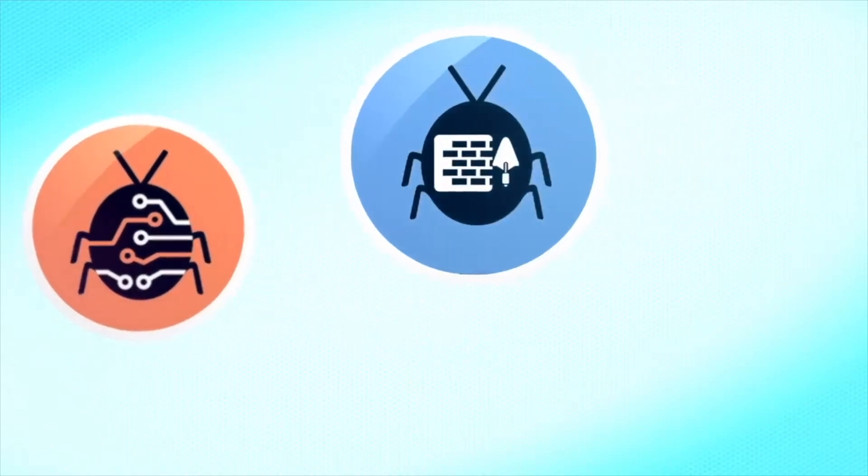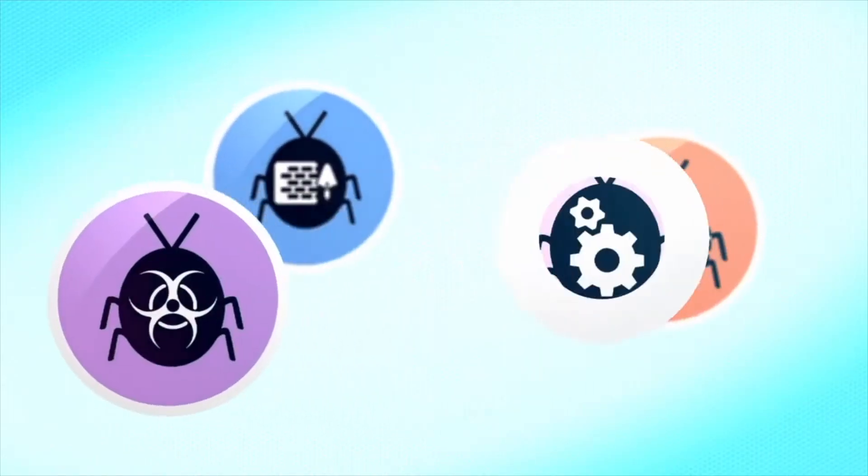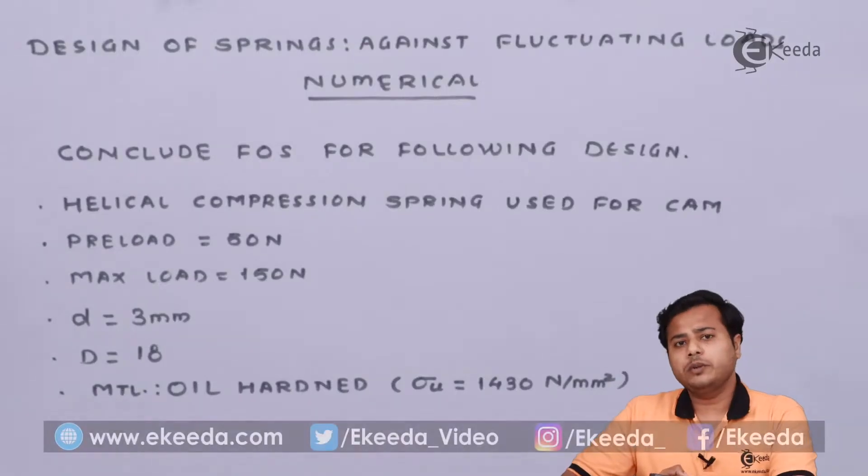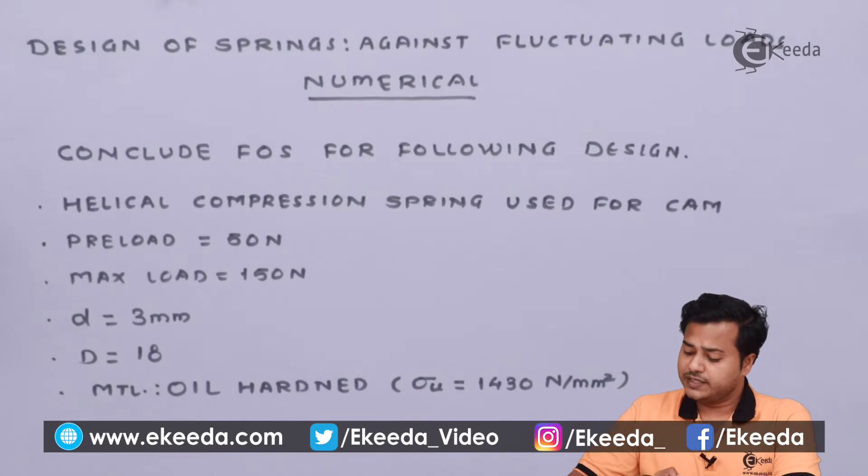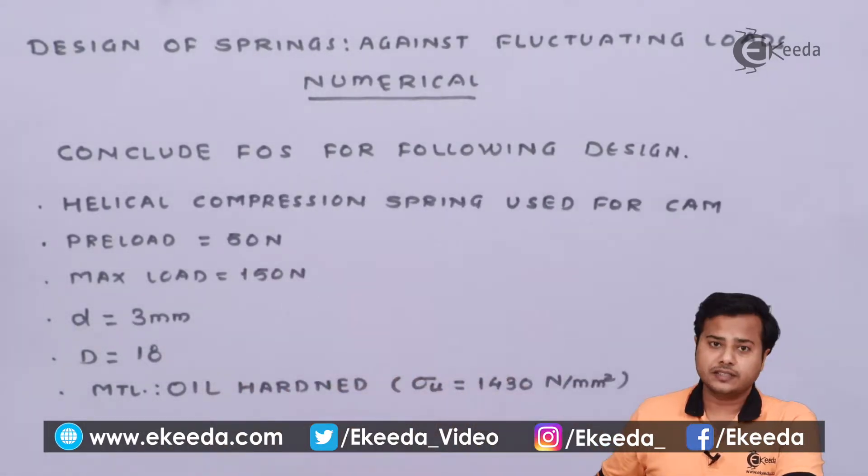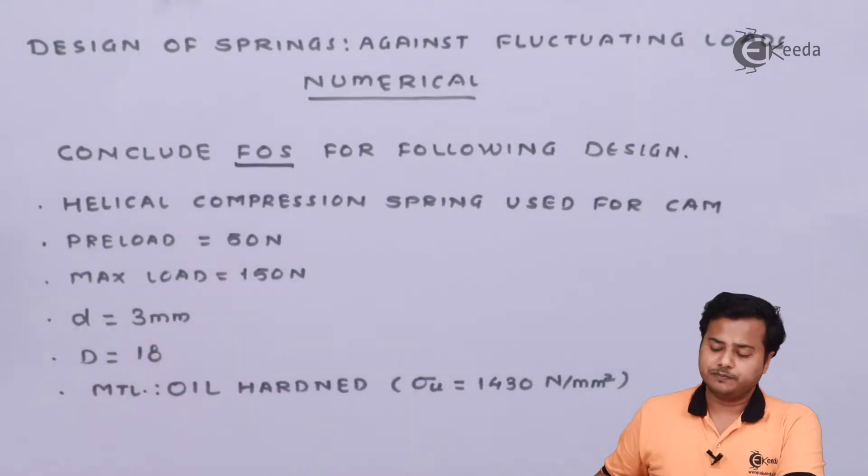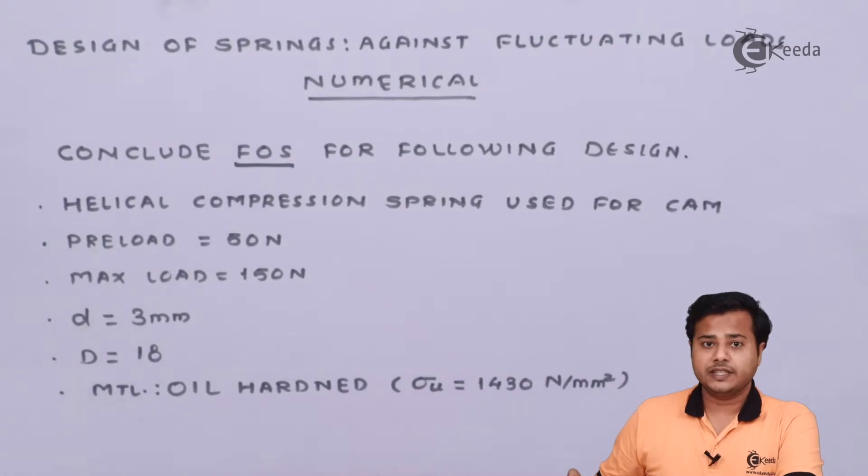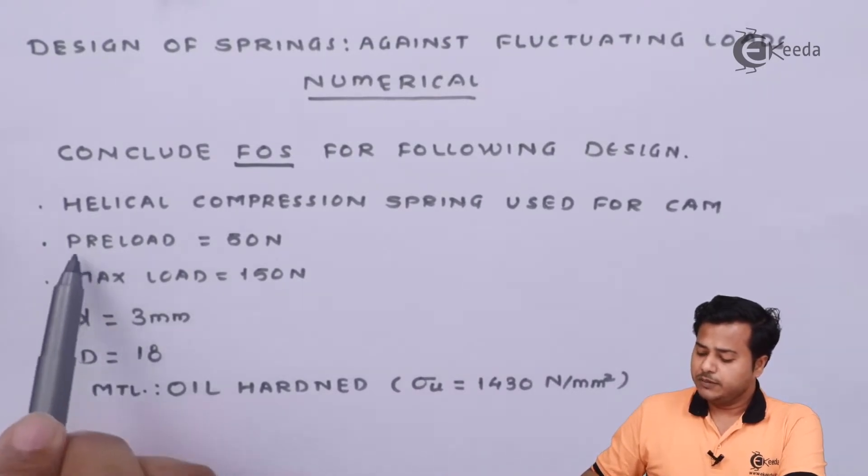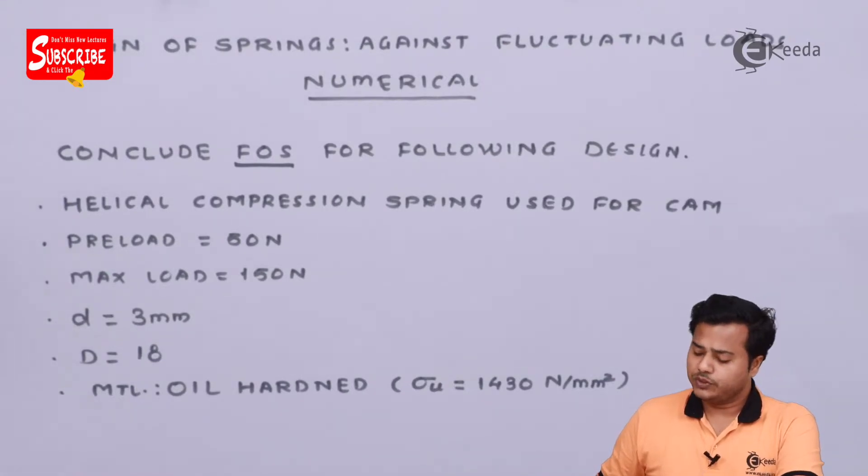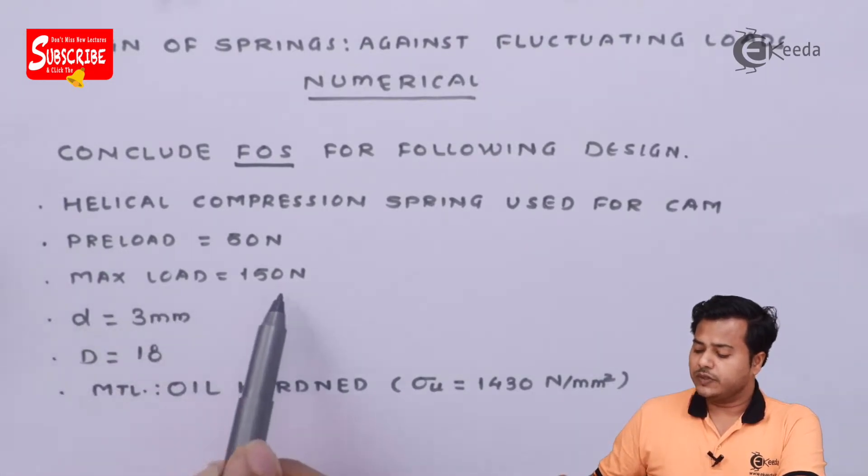So let us quickly look at it. The problem statement is there in front of you, which says that conclude factor of safety for following design. So in short, we need to find out factor of safety. Helical compression spring used for cam is given, that's the application mentioned. Pre-load given is 50 N. So it is already loaded by 50 N amount of load.